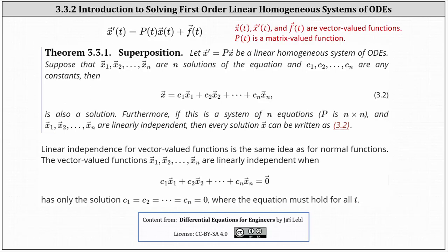Welcome to an introduction to solving first-order linear homogeneous systems of ordinary differential equations. Recall in the previous lesson we learned we can write a first-order system of ODEs as a vector equation in the form x prime of t equals p of t times x of t plus f of t, where x of t, x prime of t, and f of t are vector-valued functions, and p of t is a matrix-valued function.